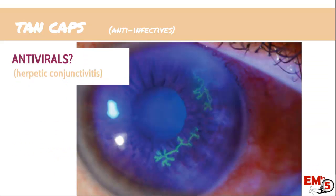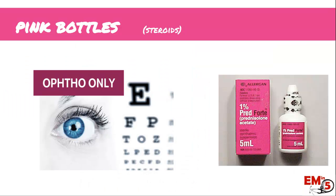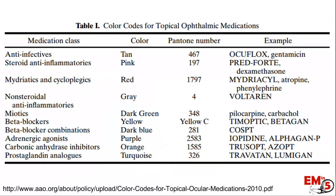What about antivirals? If someone comes in with herpetic conjunctivitis, what are we going to prescribe? This would really only be prescribed by ophthalmology, because you really want these patients to go see ophthalmology right away, and then they'll help prescribe the antivirals. Another category in this group is the pink tops or pink bottles — these are the steroids.